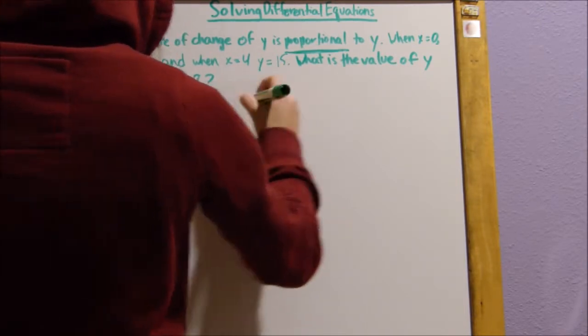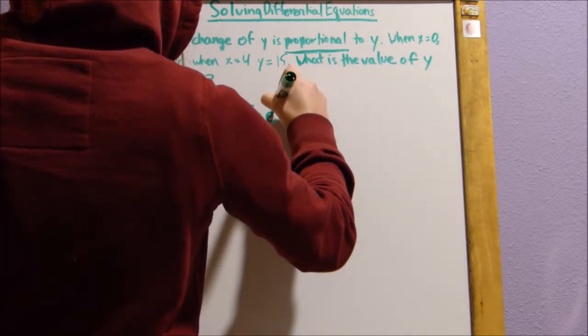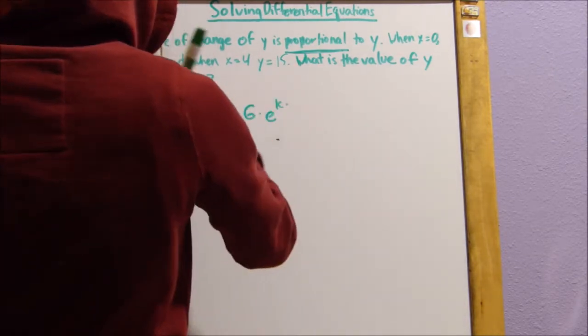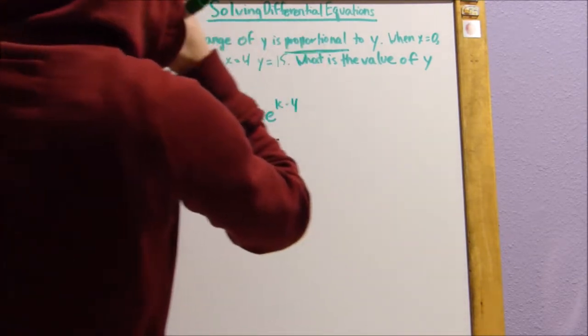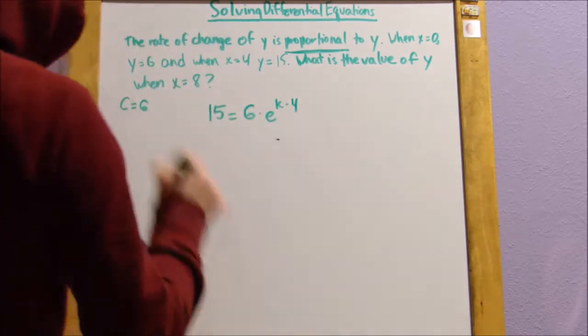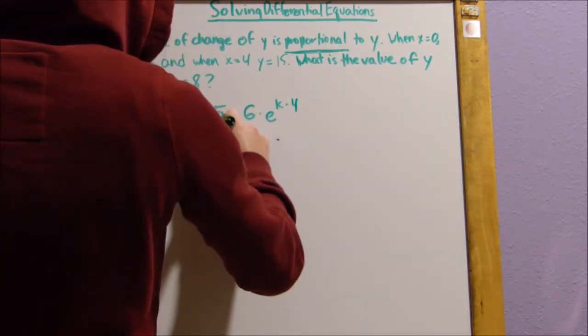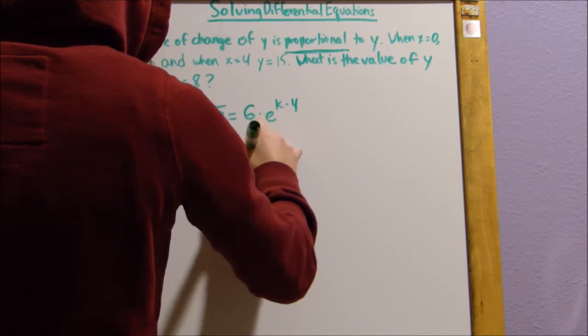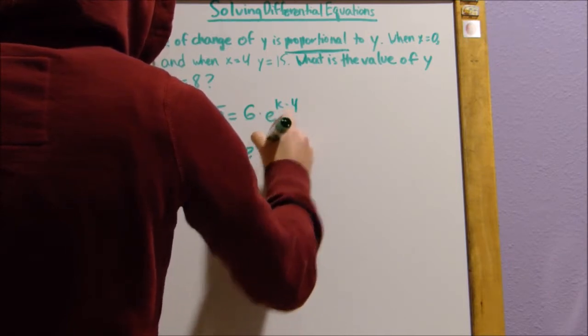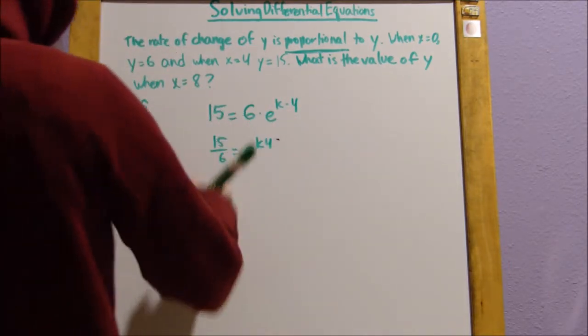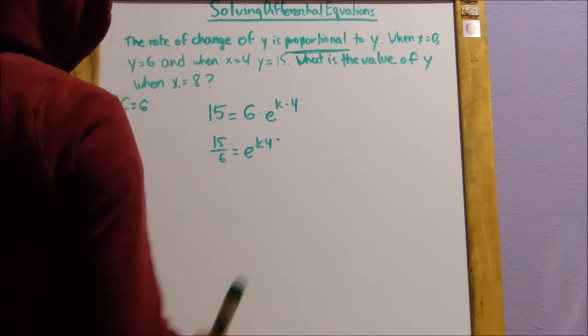So 15 equals c, 6 times e to the k times 4. Alright, now we're going to work backwards. 15 divided by 6 equals e times 4k.